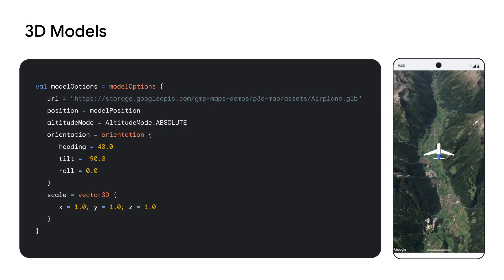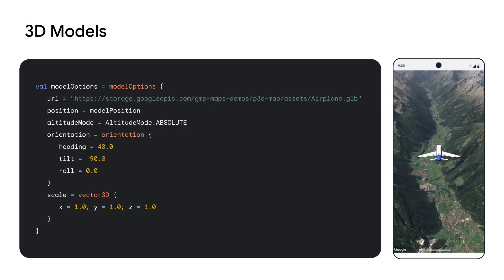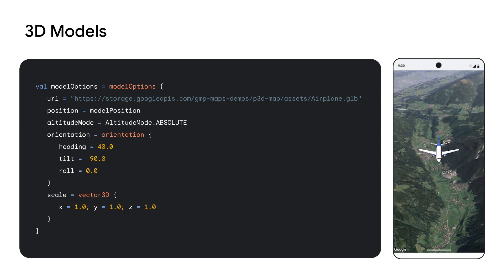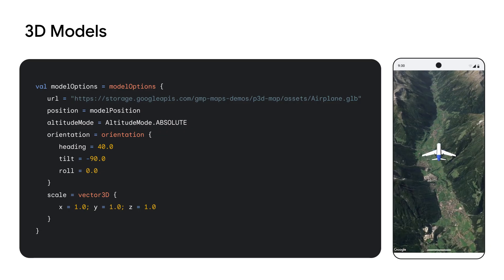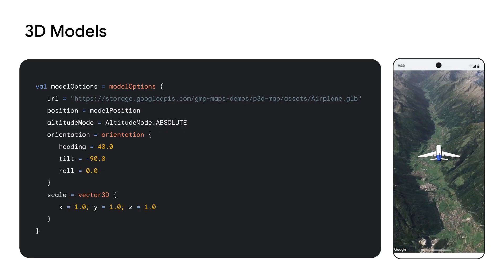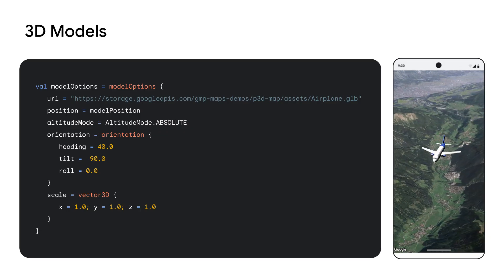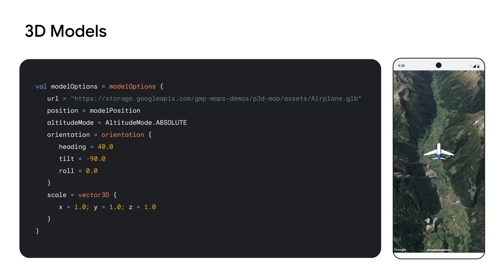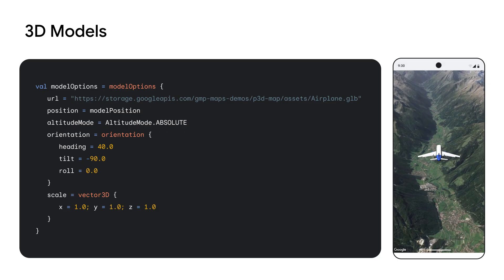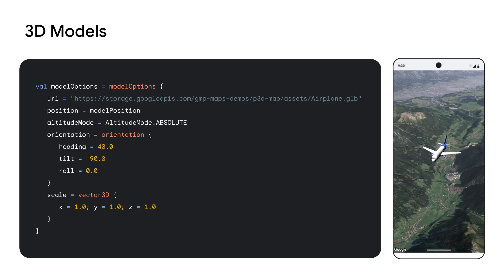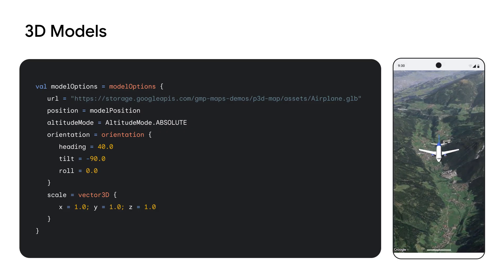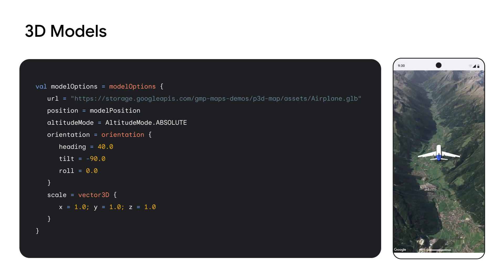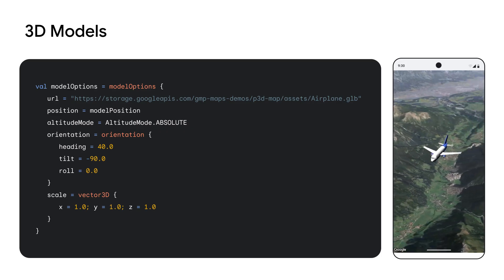Beyond markers, 3D Maps allows you to enrich your 3D scenes by adding full 3D models. Unlike markers, which are typically 2D icons anchored to a specific point, models are full three-dimensional objects that can represent a wide variety of real-world or fictional entities. You can add a 3D model to the map using the ModelOptions class and the addModel method. In addition to the position, you will have to specify the orientation and the scale of the model. The same ID rules apply for manipulating and removing models from the map.